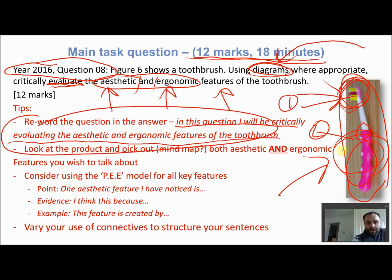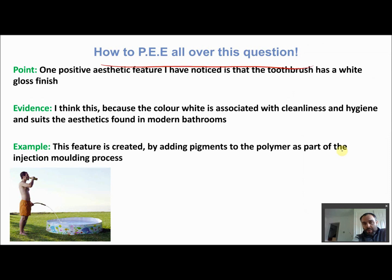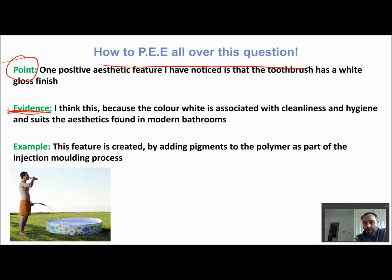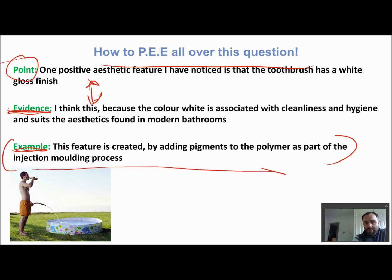Going back to the question: after rewording it, use the PEE model. How do we PEE all over our questions? First, come up with a Point. For example: 'One positive aesthetic feature I've noticed is that the toothbrush has a white gloss finish.' Then Evidence — 'I think this because the color white is associated with cleanliness and hygiene and suits the aesthetics found in most modern bathrooms.' Then Explanation: 'This feature is created by adding pigments to the polymer as part of the injection molding process.'